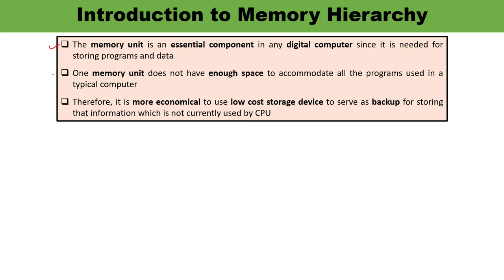Most general purpose computers usually run with higher efficiency and must be equipped with additional storage beyond the capacity of the main memory. Sometimes one memory unit is not enough — they don't have enough space to accommodate all programs. It is also more economical to use low-cost storage devices that can serve as a backup to store information not currently being used by the CPU, and that can be accessed whenever required.